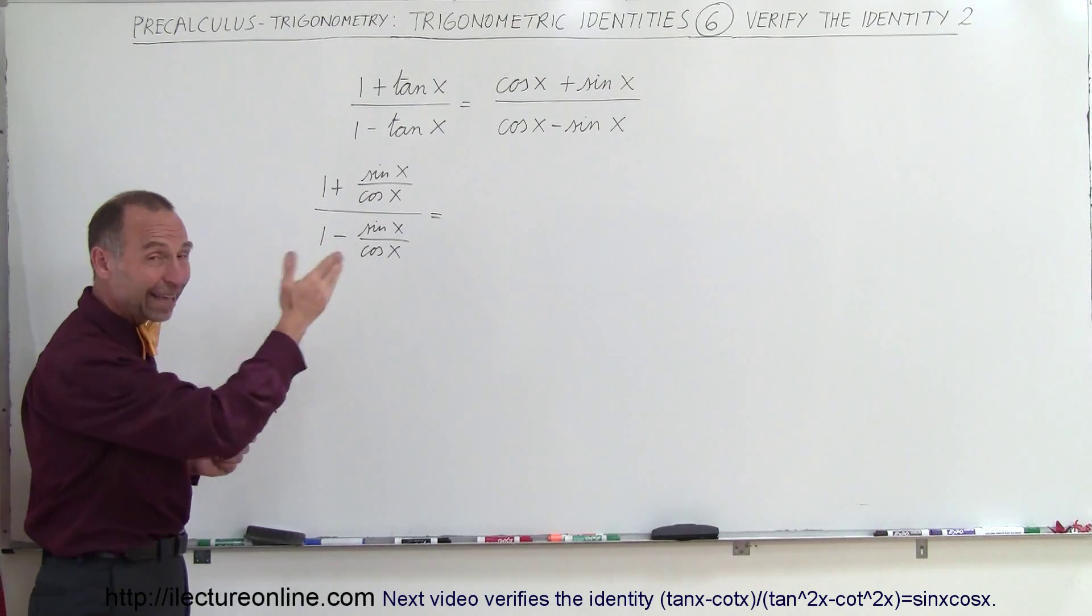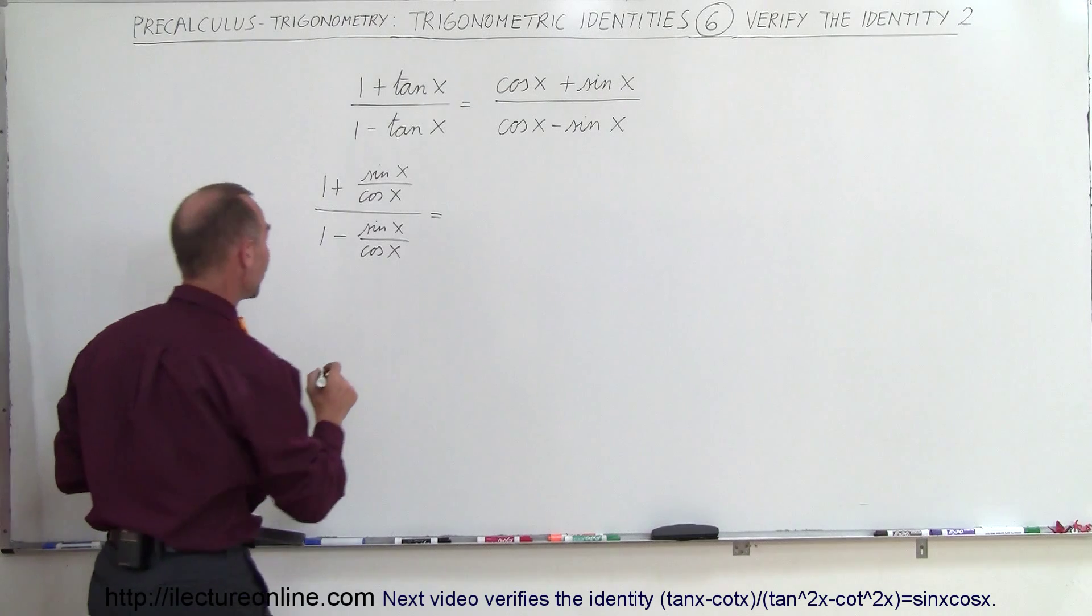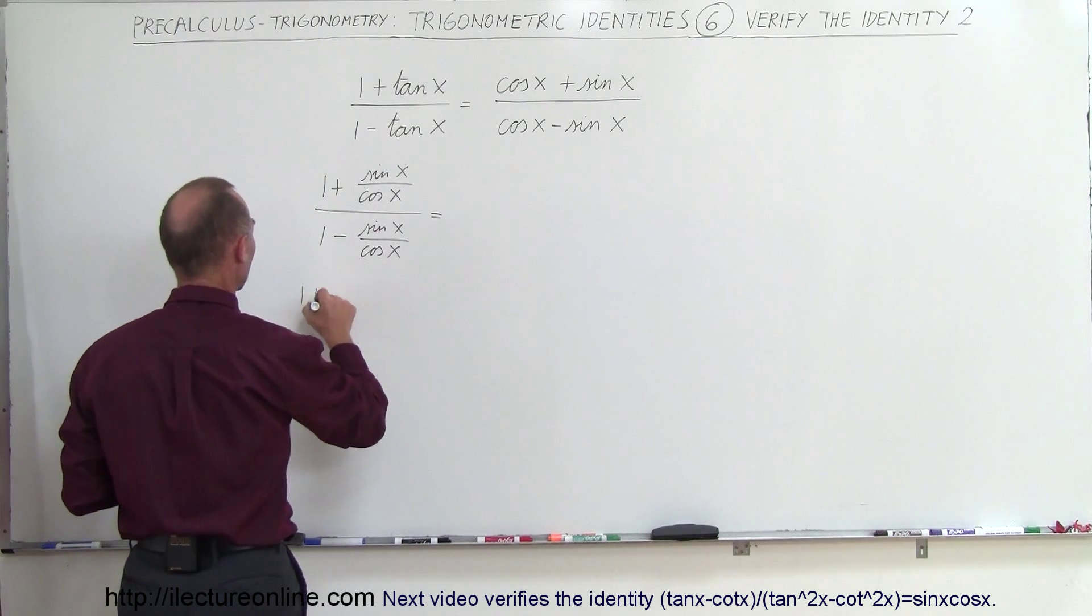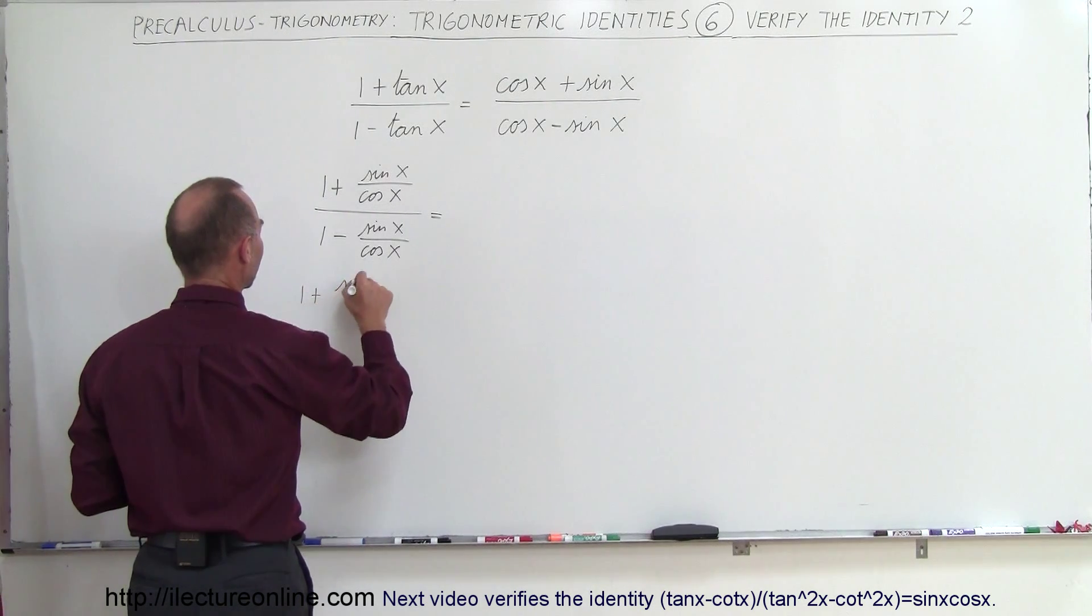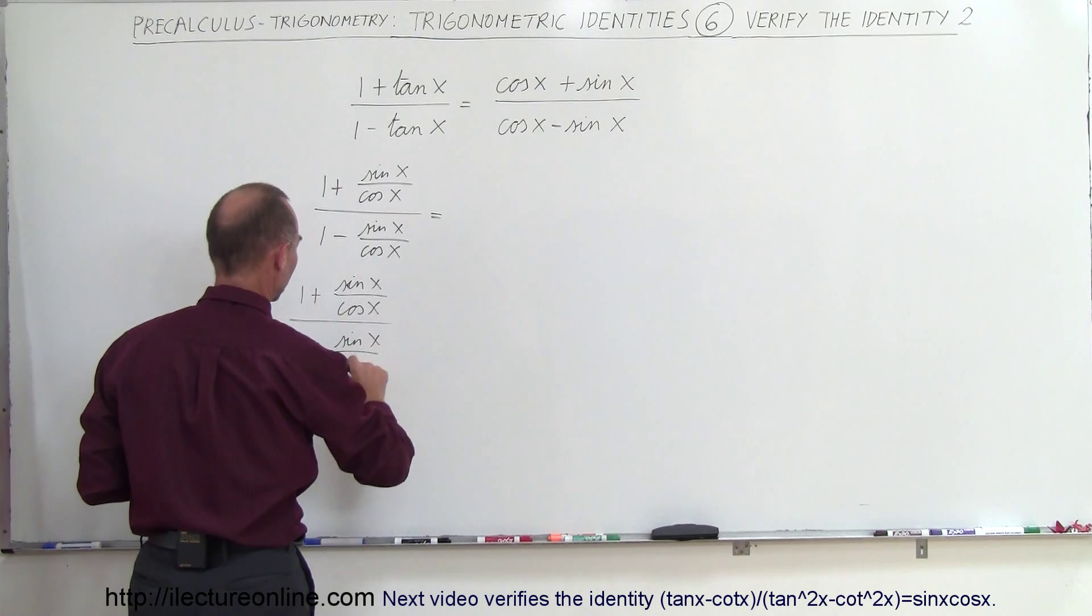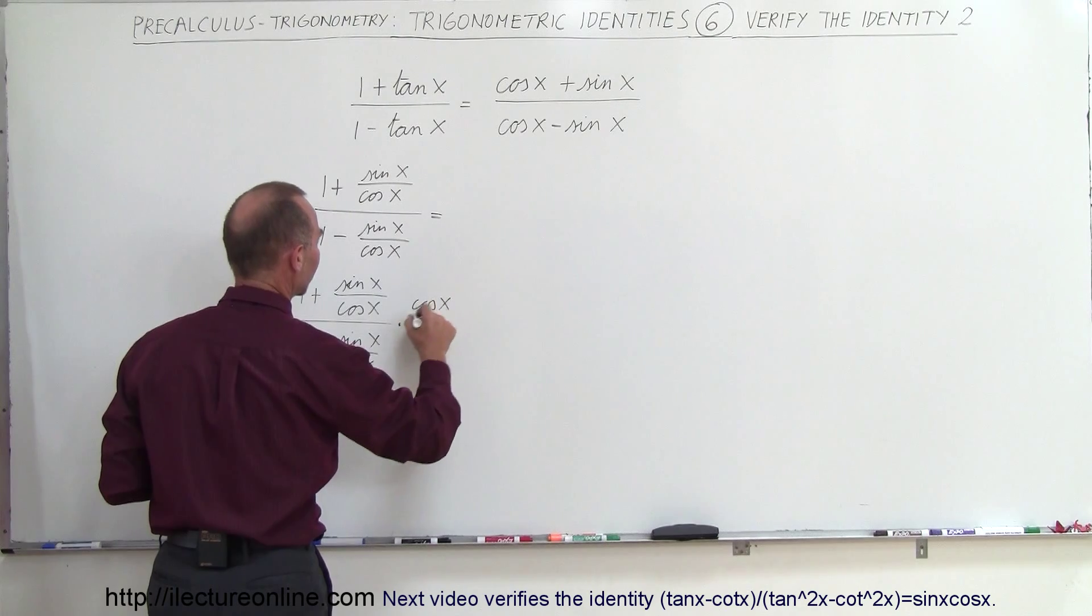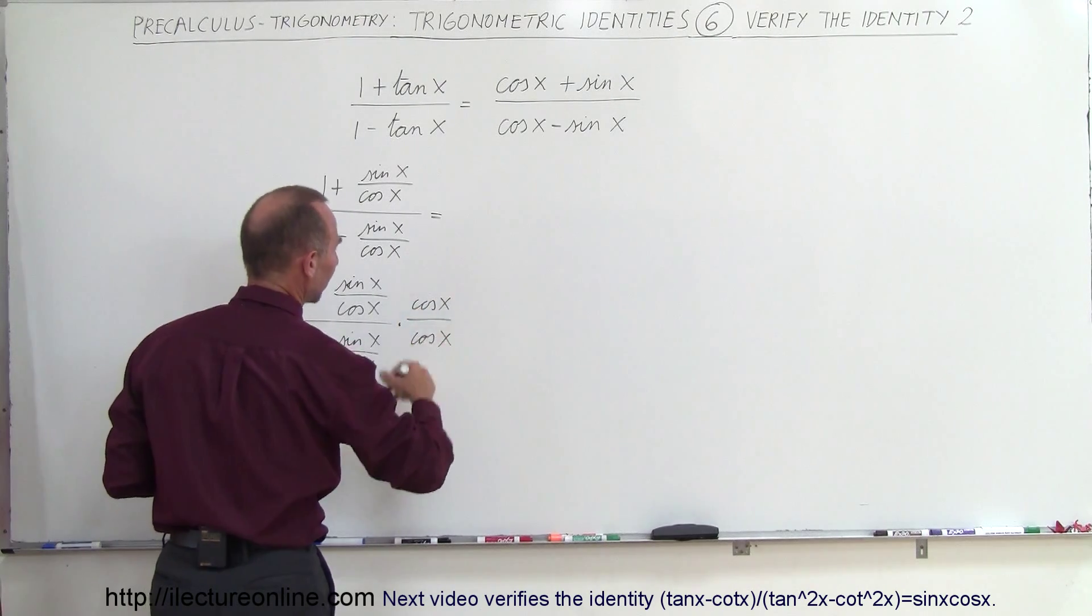And of course I glance to the right side and I know when I do that I'll get closer to what I'm seeing over there. So I'm going to write this as 1 plus the sine of x divided by the cosine of x divided by 1 minus the sine of x divided by the cosine of x and multiply both the top and the bottom by the cosine of x like that.